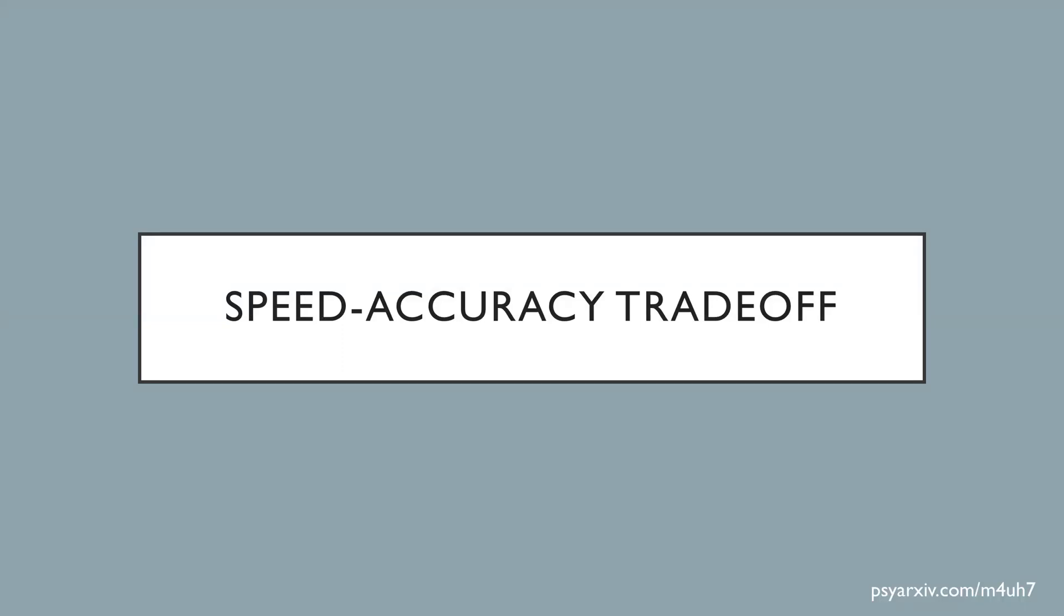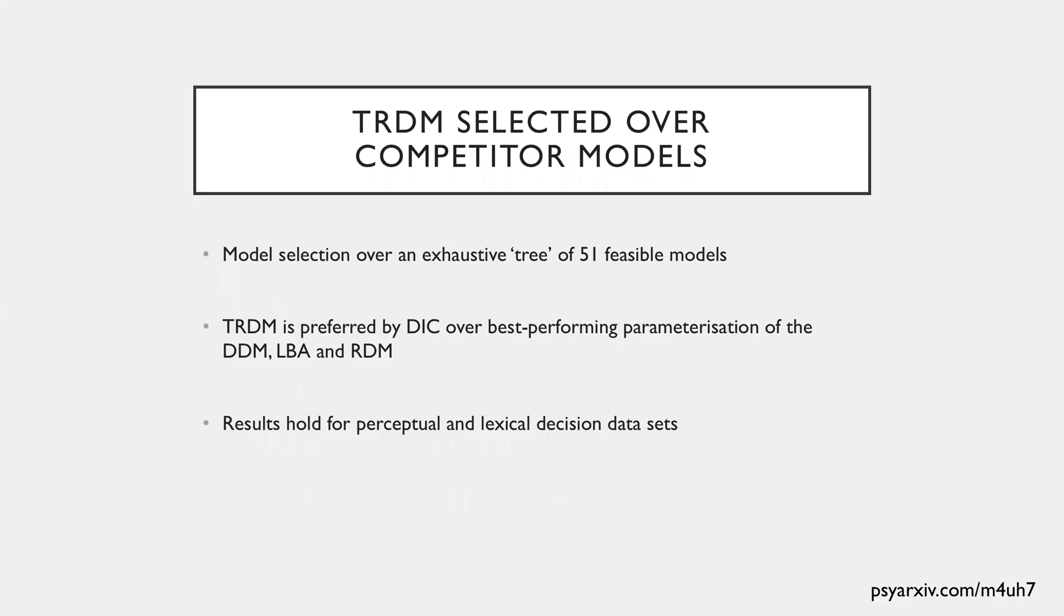First, we're going to look at the speed accuracy trade-off. So there's a lot of detail here that I'm going to cut for the purposes of the presentation, but the main idea is that we did a model selection in hierarchical Bayesian framework over an exhaustive kind of tree of 51 feasible models,